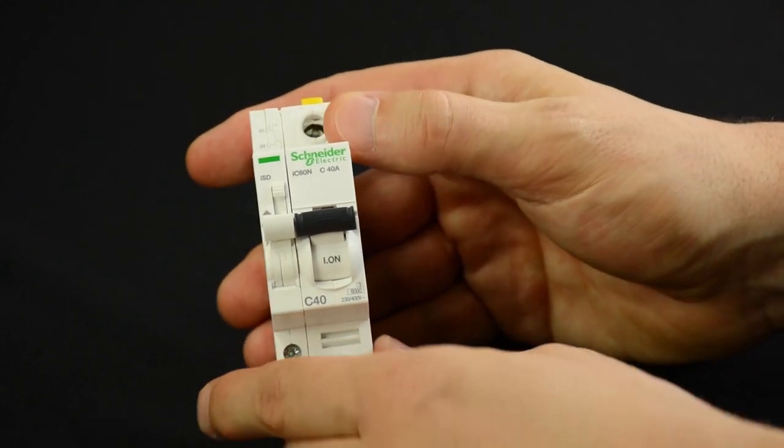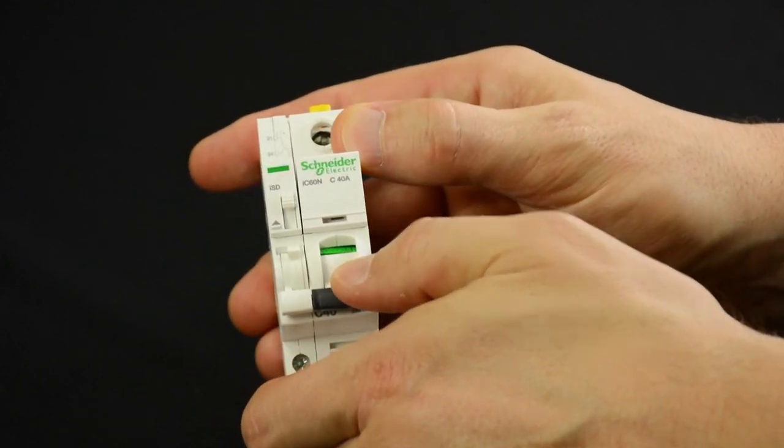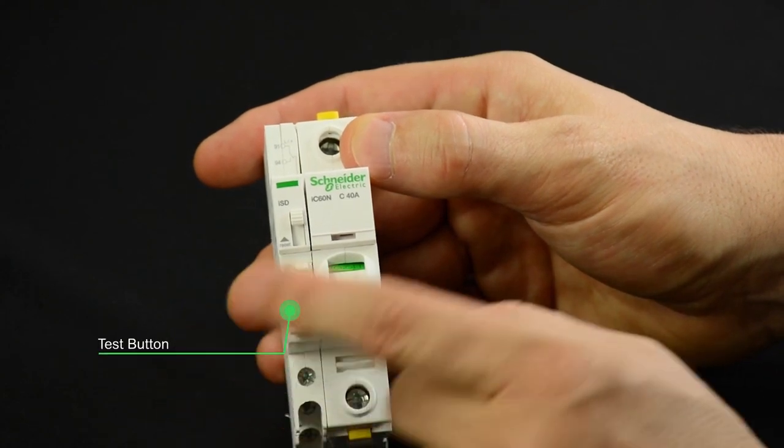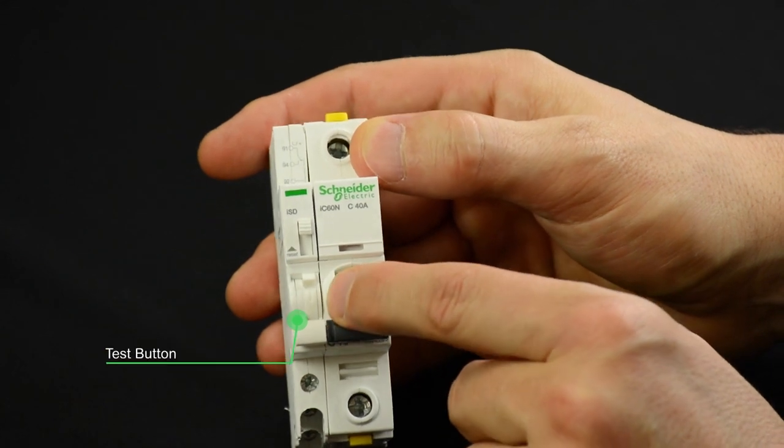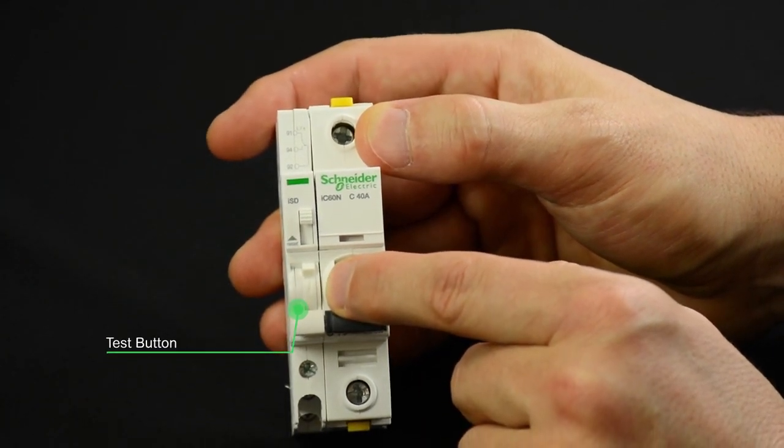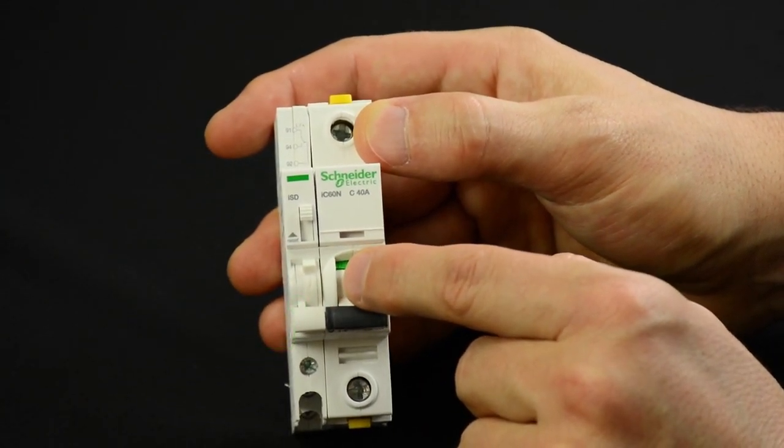Start by manually opening the circuit breaker. It will reveal the test button. One can read the letter T on the test button. Press the button downwards.